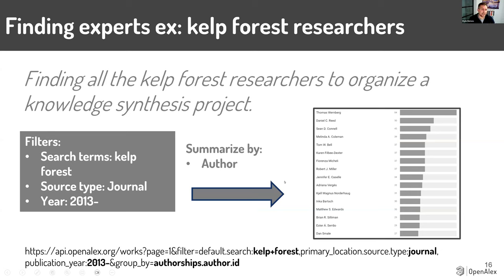A simple use case close to my heart: finding experts in a field. Say you want to find experts in kelp forest and you didn't find a concept or an SDG that really represented it — you can use search terms. I searched kelp forest throughout all full text, limited to journals, and set year after 2013 because I only want active researchers. The example: you're bringing together researchers who study kelp forests and want to find them to invite collaboration. I summarized by author — you get the author name on the left and the total number of documents matching that search term — and you can export a list of hundreds of researchers to get the full list.